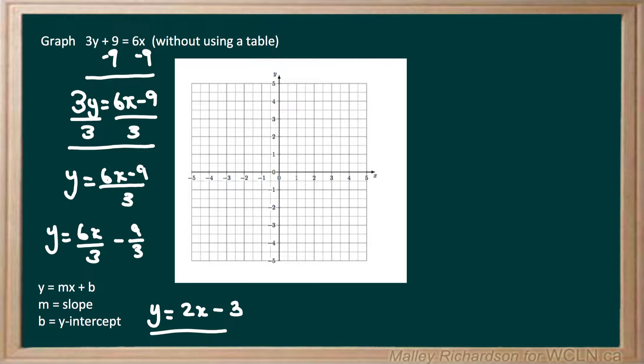Now before we graph, we want to find our slope and our y-intercept. So our slope in our formula of y equals mx plus b is always beside our x. So in our formula of y equals 2x minus 3, 2 is going to be our slope. And our y-intercept b is negative 3.